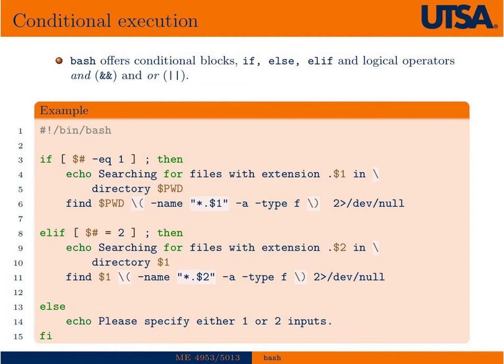And so in this example, what we're actually going to do is look at the number of command line arguments. So this special character there actually gives us the number of command line arguments. So if the number of command line arguments is equal to one, then we're going to search the current directory, which is also stored in the variable PWD. So in this case, we're going to search the current working directory for files of the file extension that we'll give on the command line.